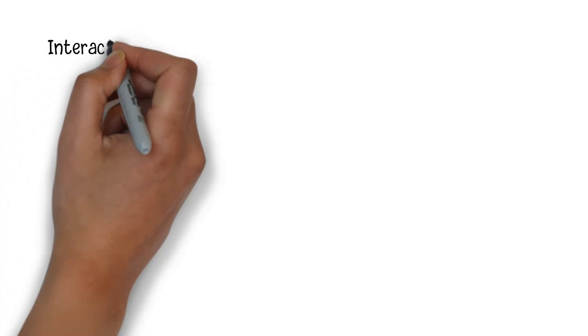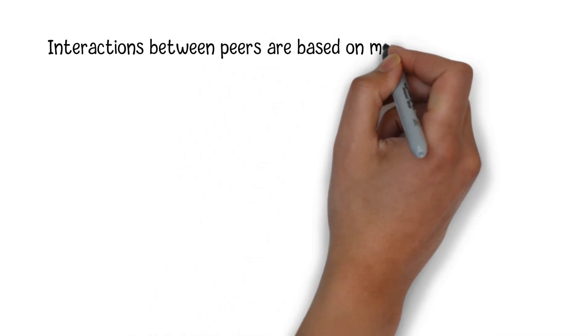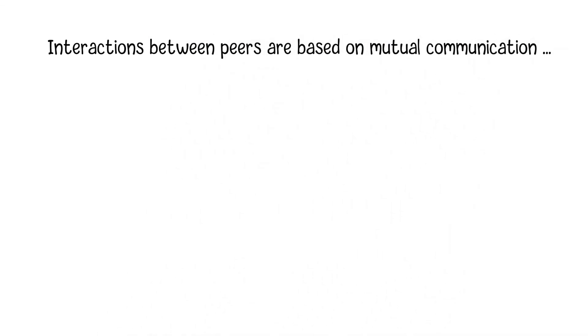However, in our daily life, many interactions between peers, especially the transfer of knowledge and learning skills, are based on mutual communication. Generally, sitting in the same classroom with a high-ability student does not naturally make you a high-ability student. You need to communicate with each other to learn new skills.